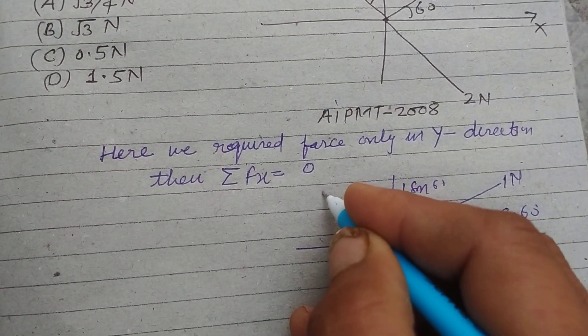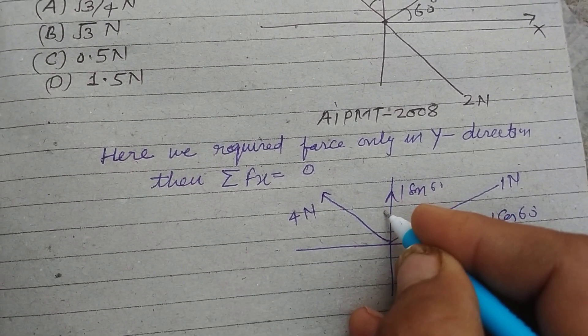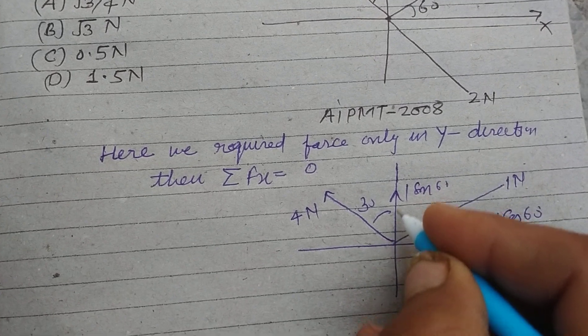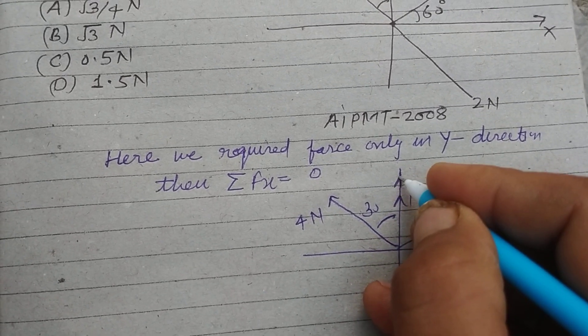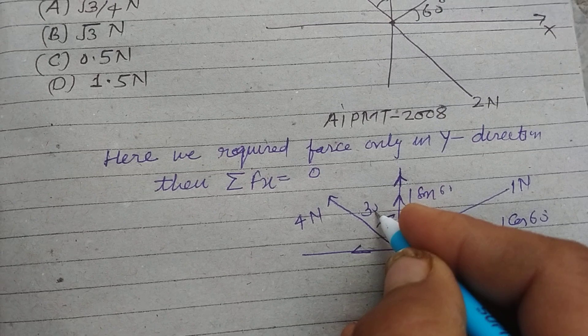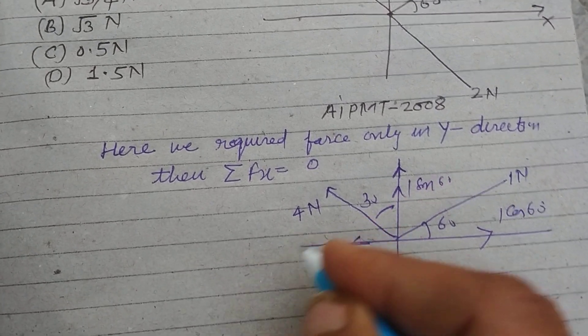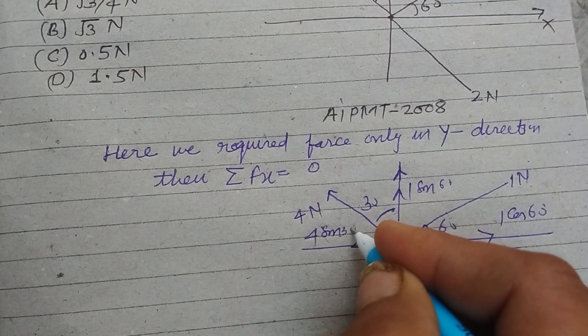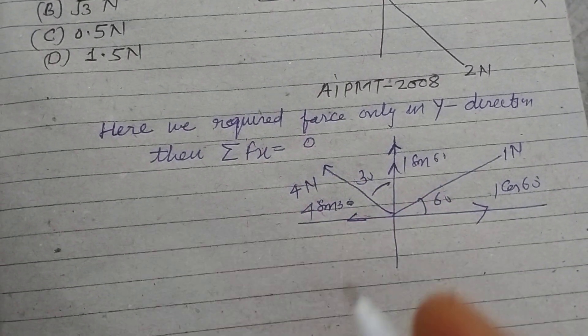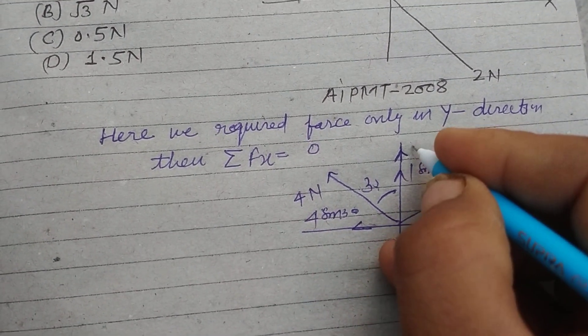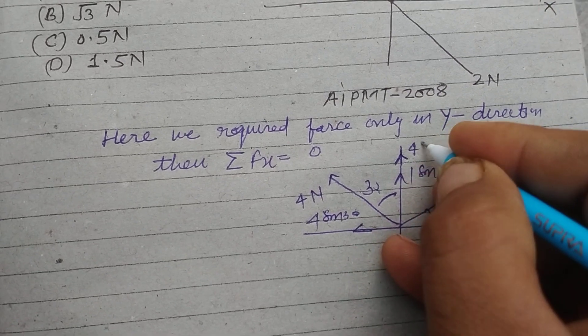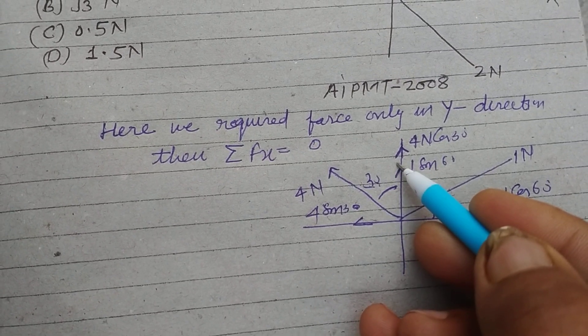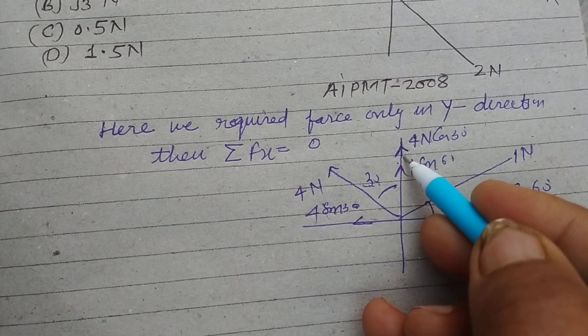Here is force of 4 newton. And its X component is this sin 30, 4 sin 30, because if we take this, this is 30 and this is cos 30, 4 cos 30. This is the X component and this is the Y component.